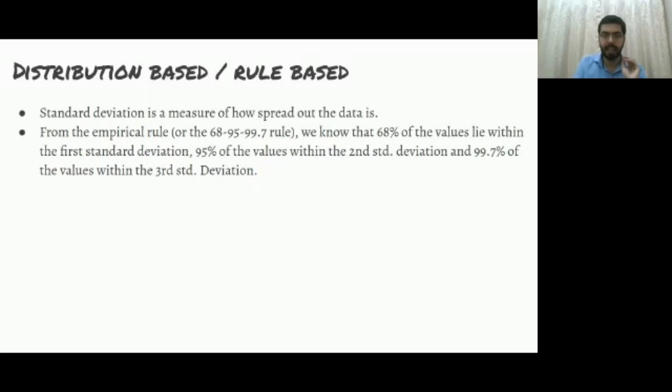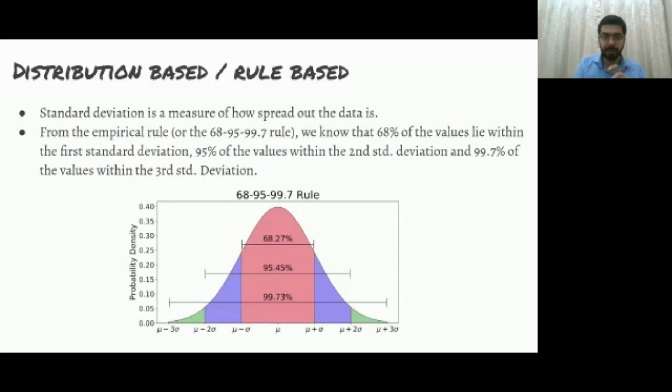To help you visualize this, I have a diagram here which will help you understand what I'm talking about. So from the mean you see that 68.27 or so, this is the rule, right? 68, 95, or 99.7. This is like basic statistics I think everybody would know, but I'm just going through this very quickly.